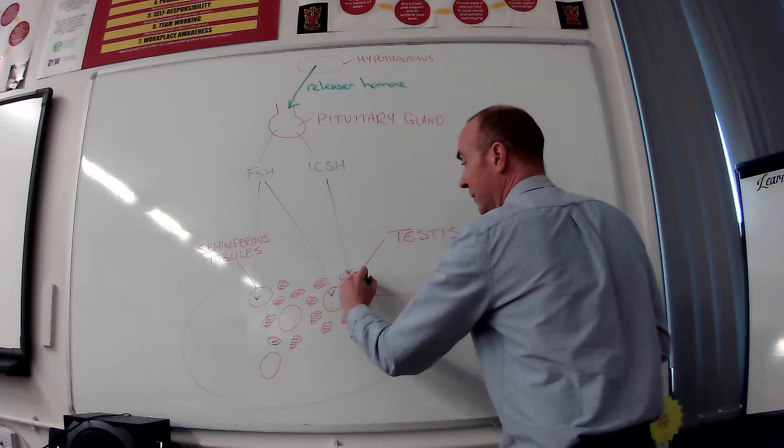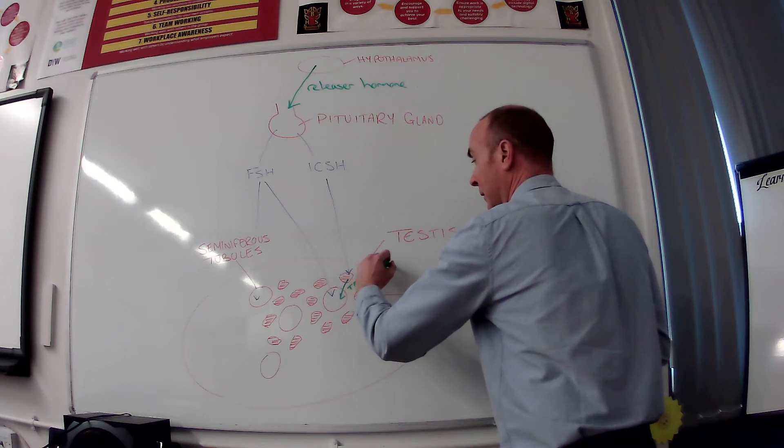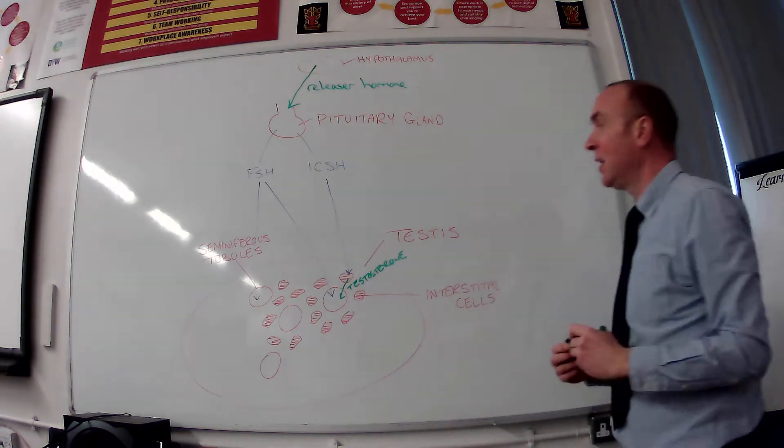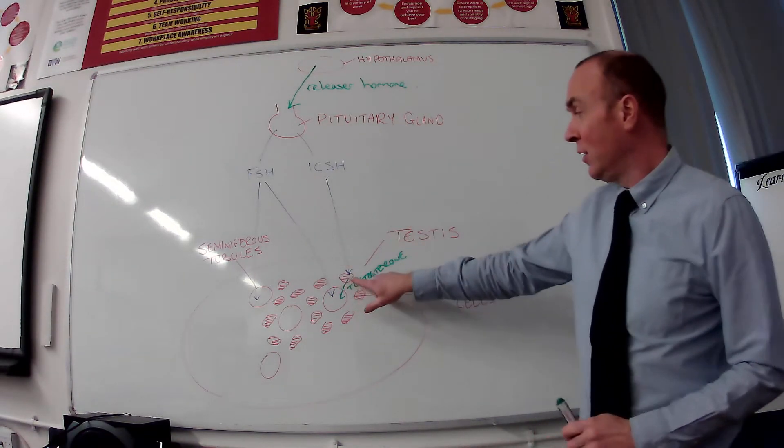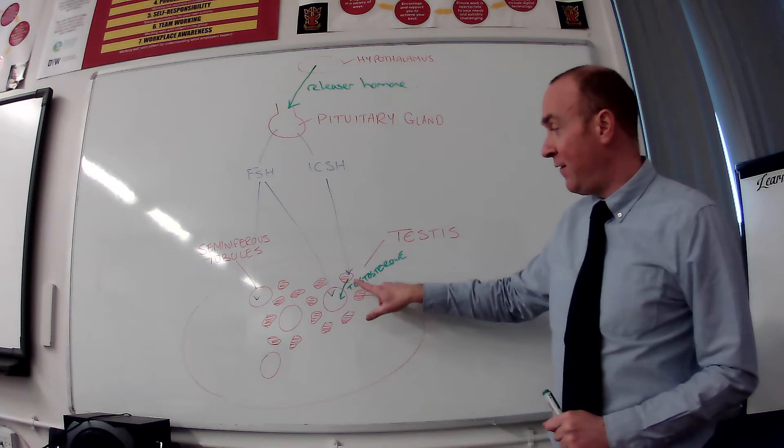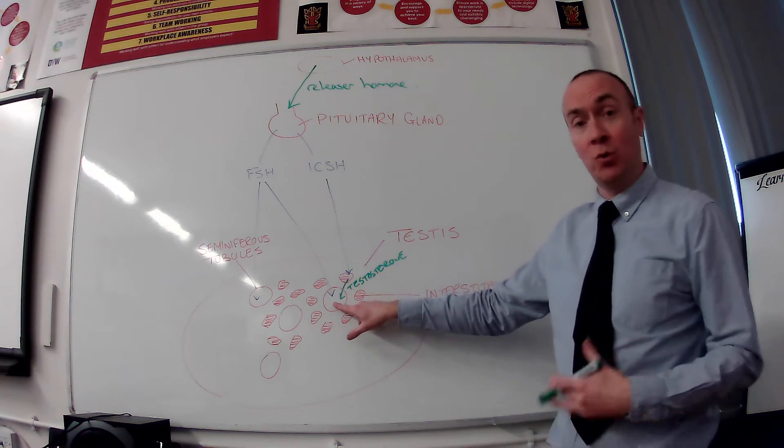So testosterone is produced by the interstitial cells. Testosterone does three things. First of all, it acts in a similar way to FSH. It acts on the seminiferous tubules to produce sperm.